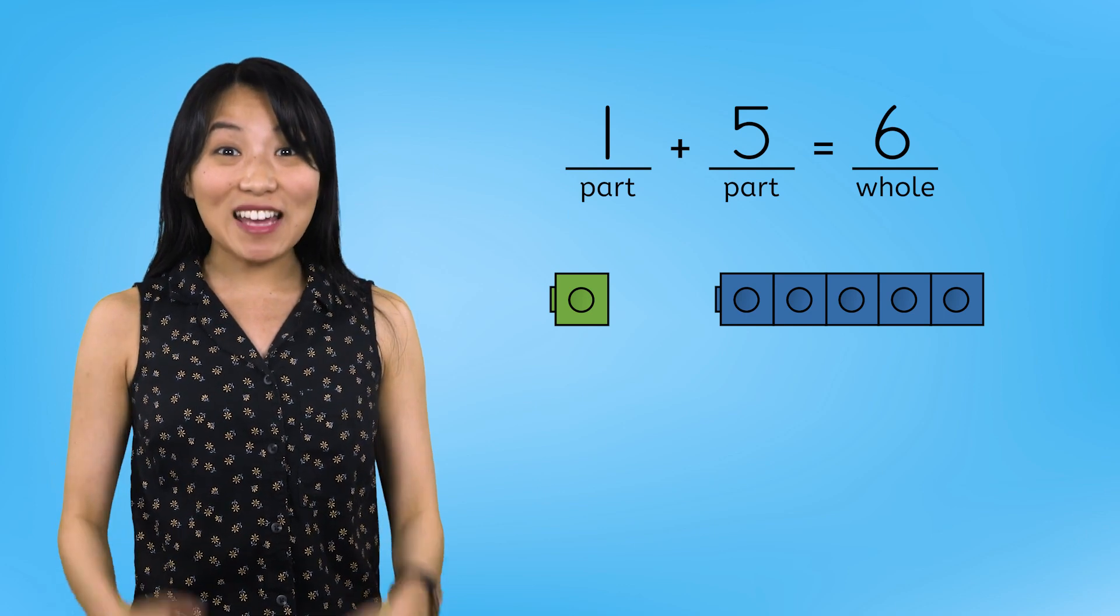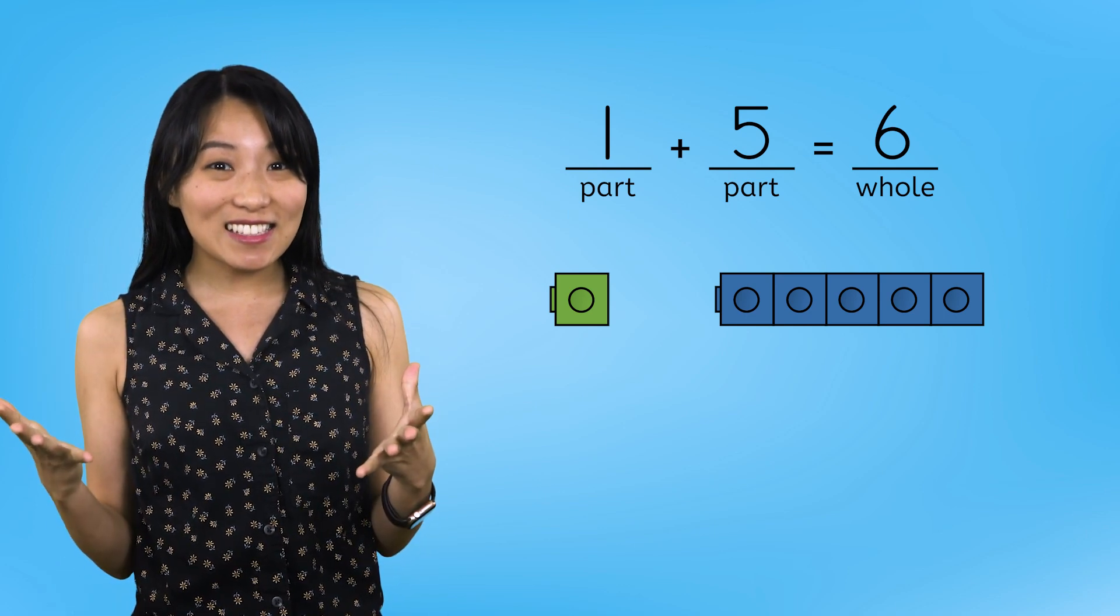Let's find another way to make 6. Let's start with 2 snap cubes this time. To find out how many more cubes we need to make 6, we need to add cubes and count on. We have 2 in this part, now we have 3, 4, 5, and 6. Great!